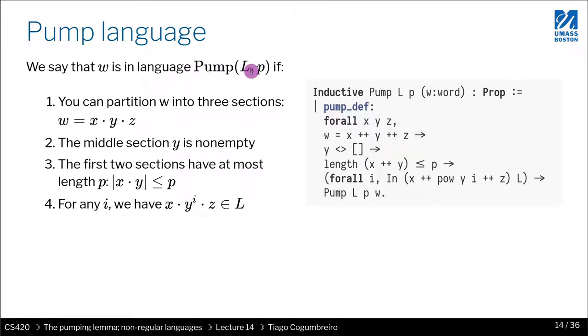So the word W is in the language pump of L, P if four conditions happen. The first one: you need to show that W can be described or divided into three substrings.